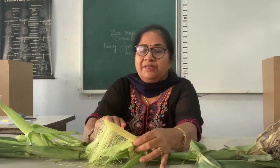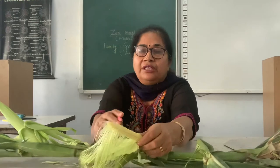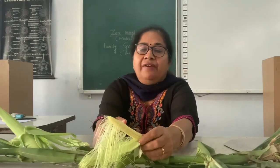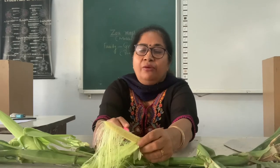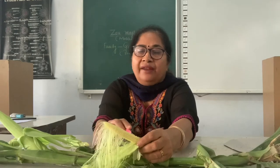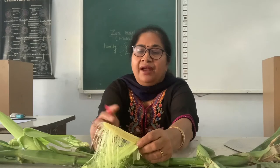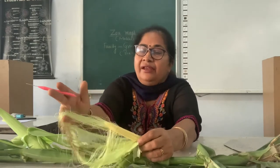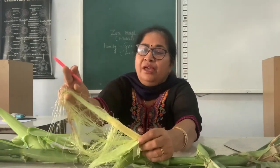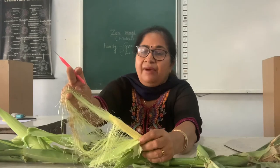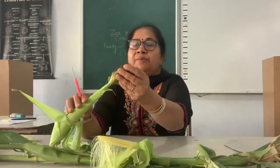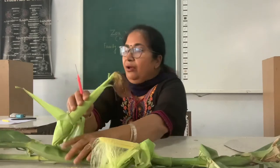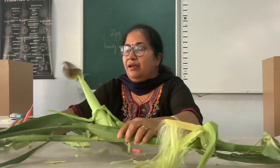When we open this cob or spadix, it has pistillate flowers. These pistillate flowers have ripened to form grains — single-seeded grains present in rows on the cob or spadix. The silk shown earlier is actually the style and stigma of the female flower, which comes out of the cob or spadix.